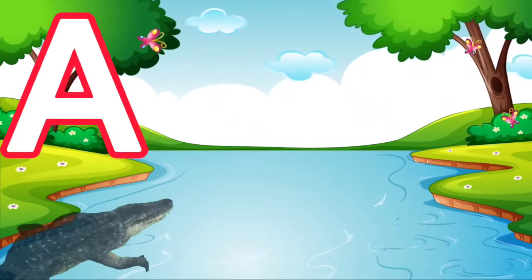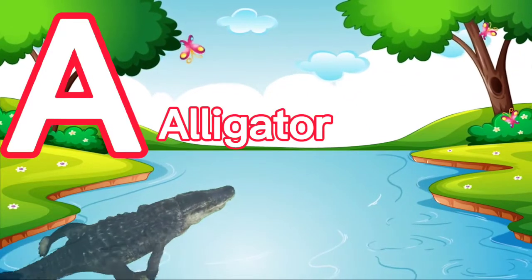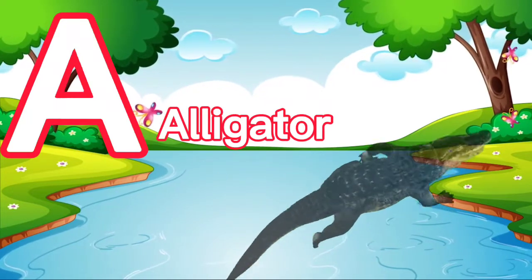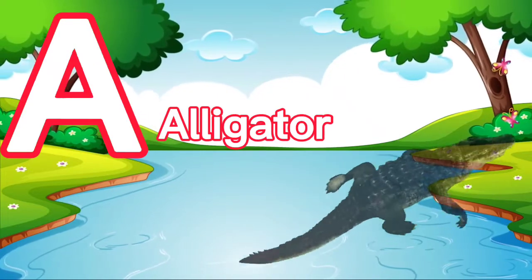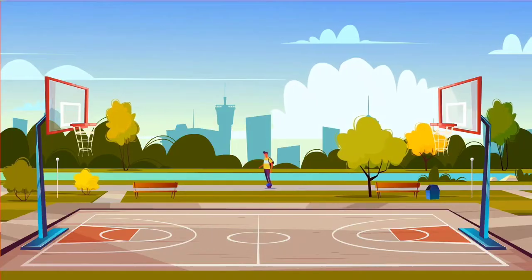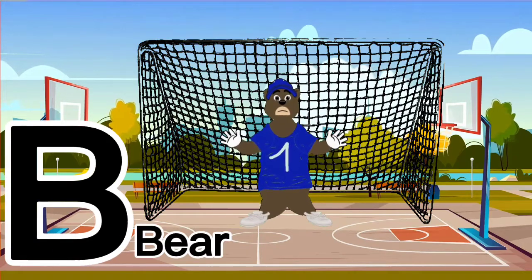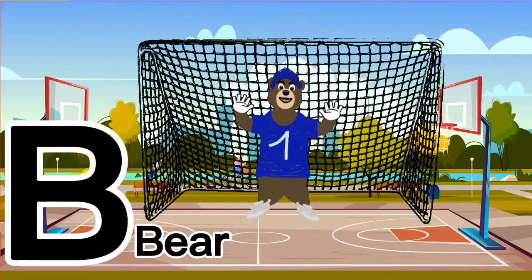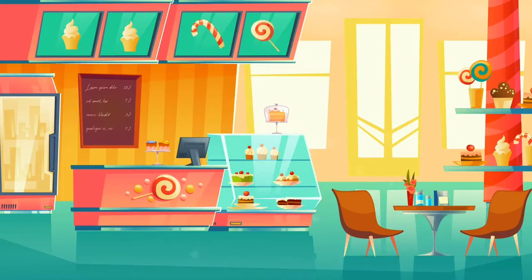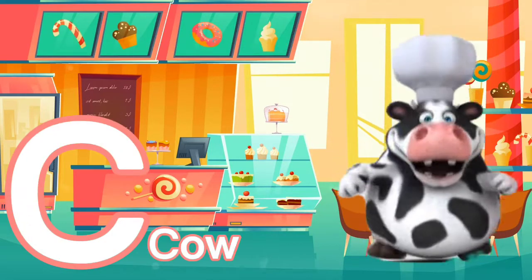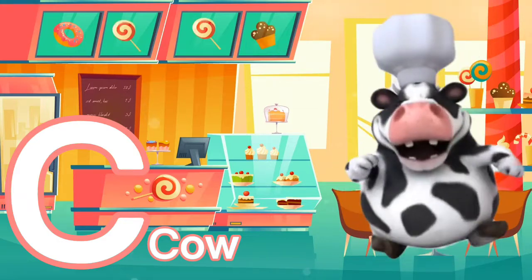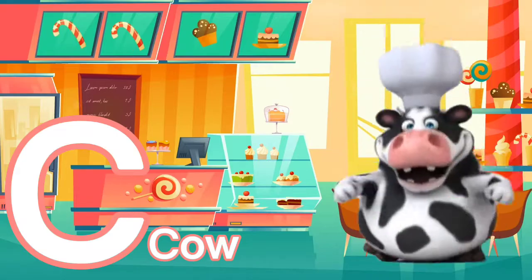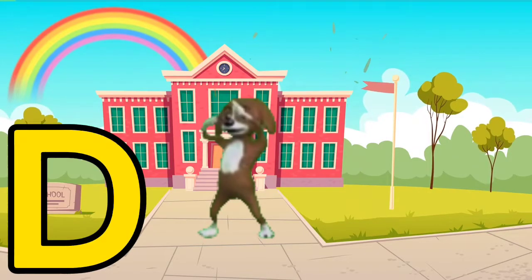A is for Alligator. B is for Bear. C is for Cow. D is for Dog.